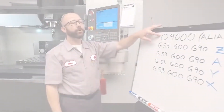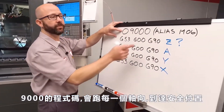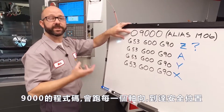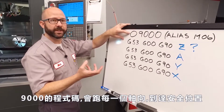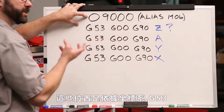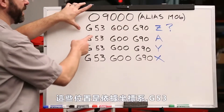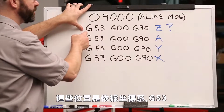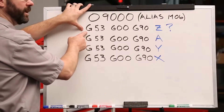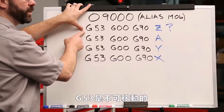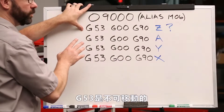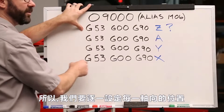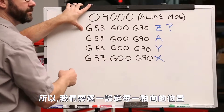Our O9000 program is going to move each of our machine axes into a safe tool change position. That position is going to be based on our machine coordinate system, G53. Now G53 is non-modal, which means we must command a G53 on each and every positioning line.